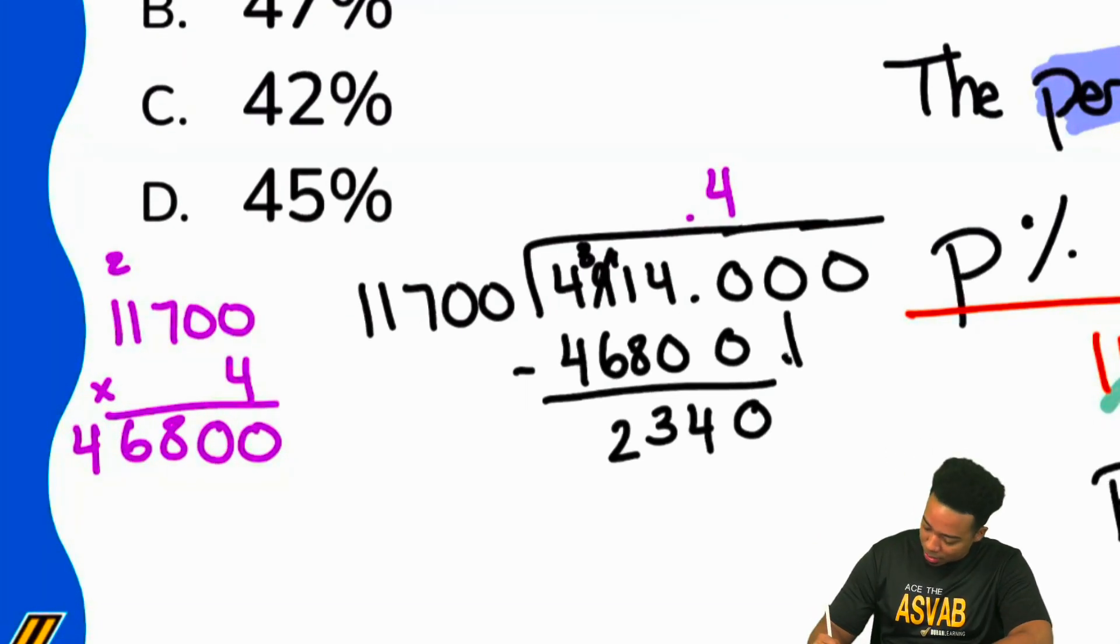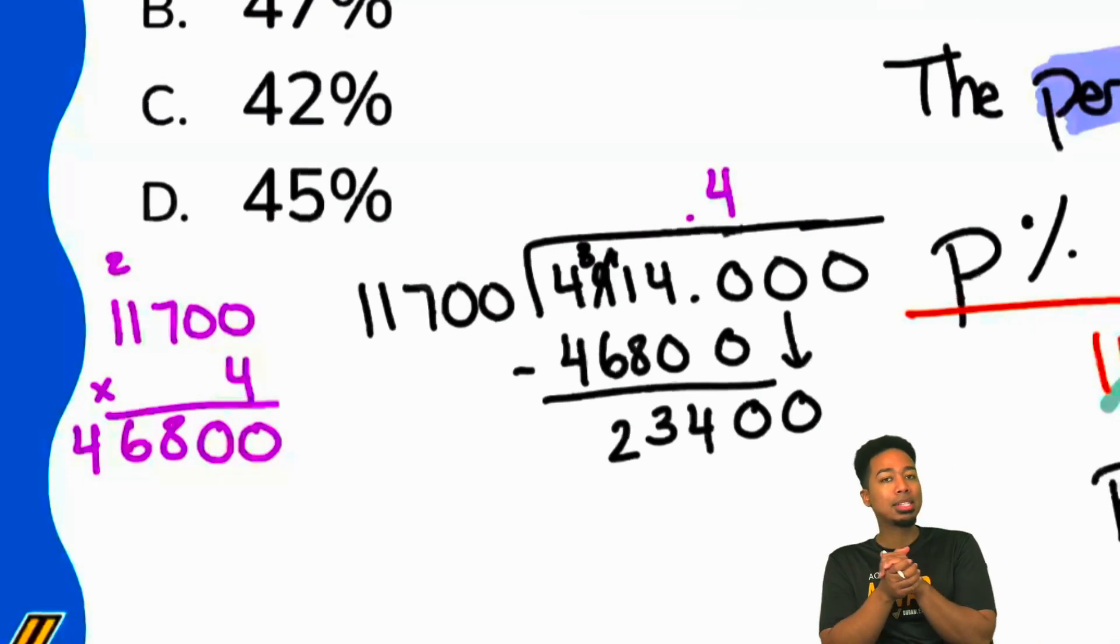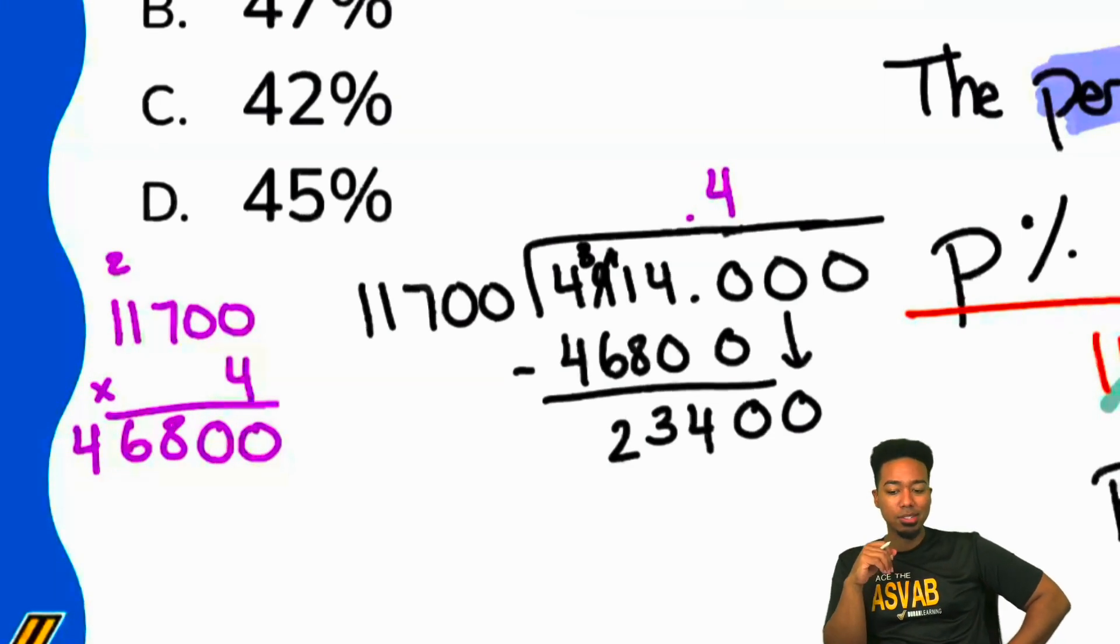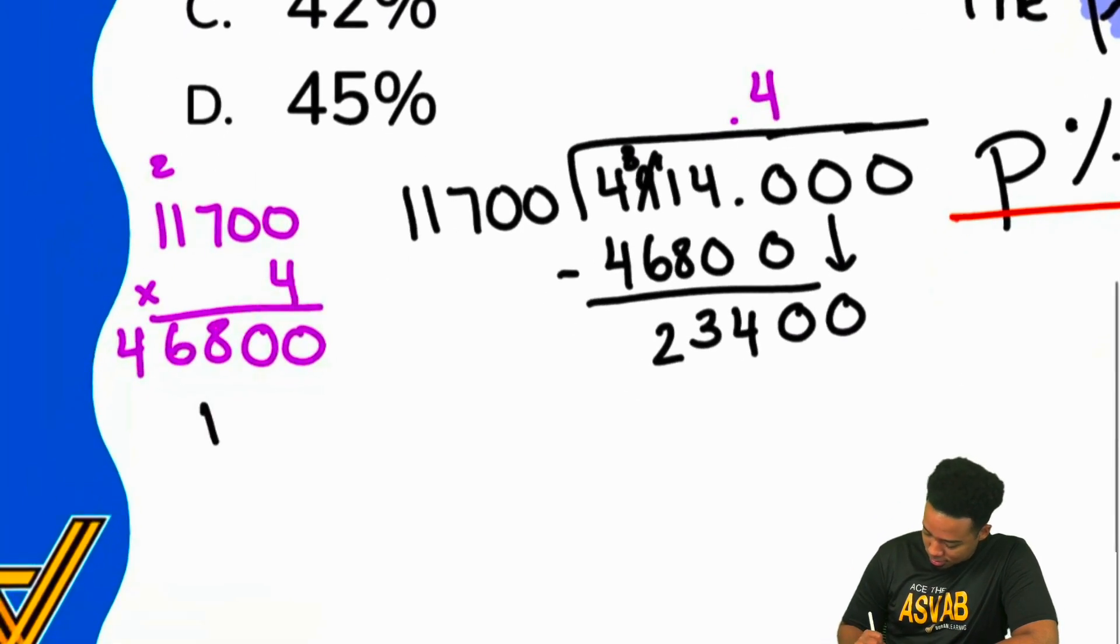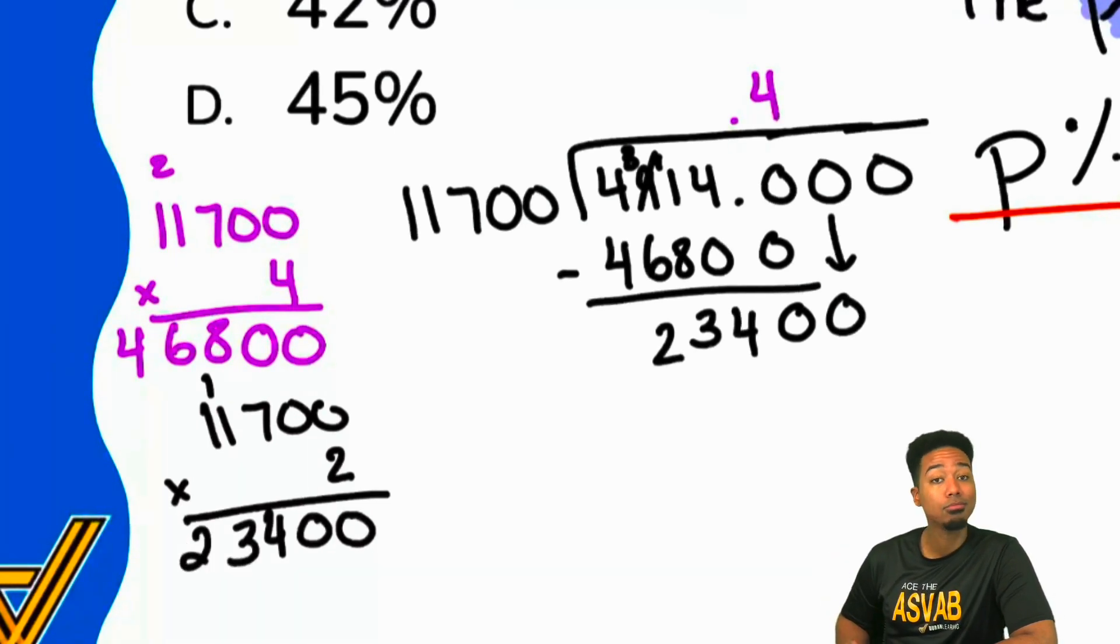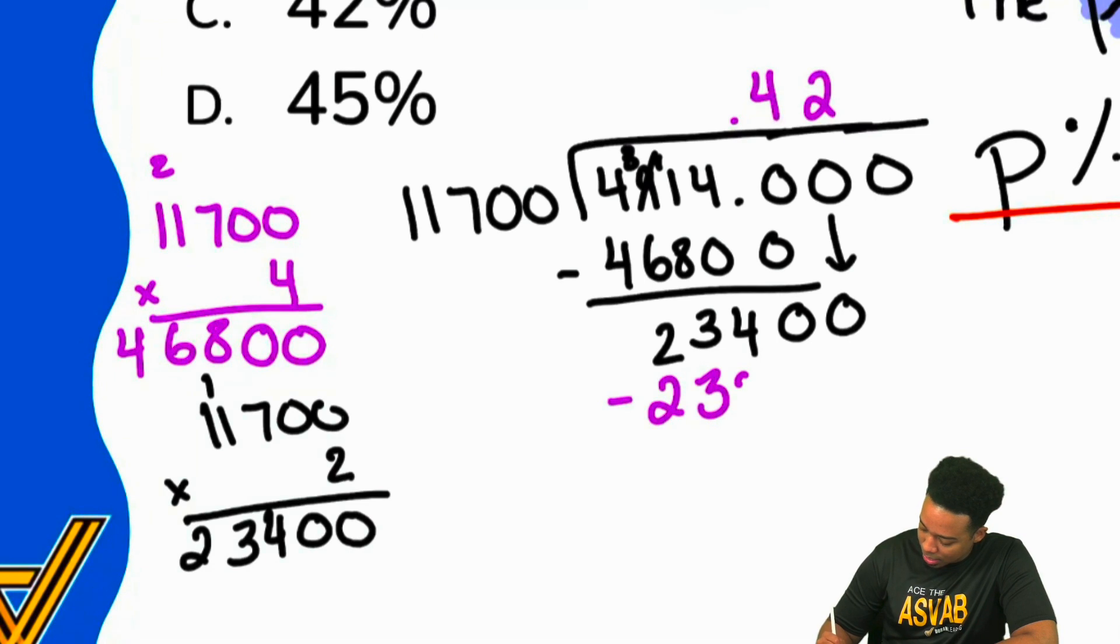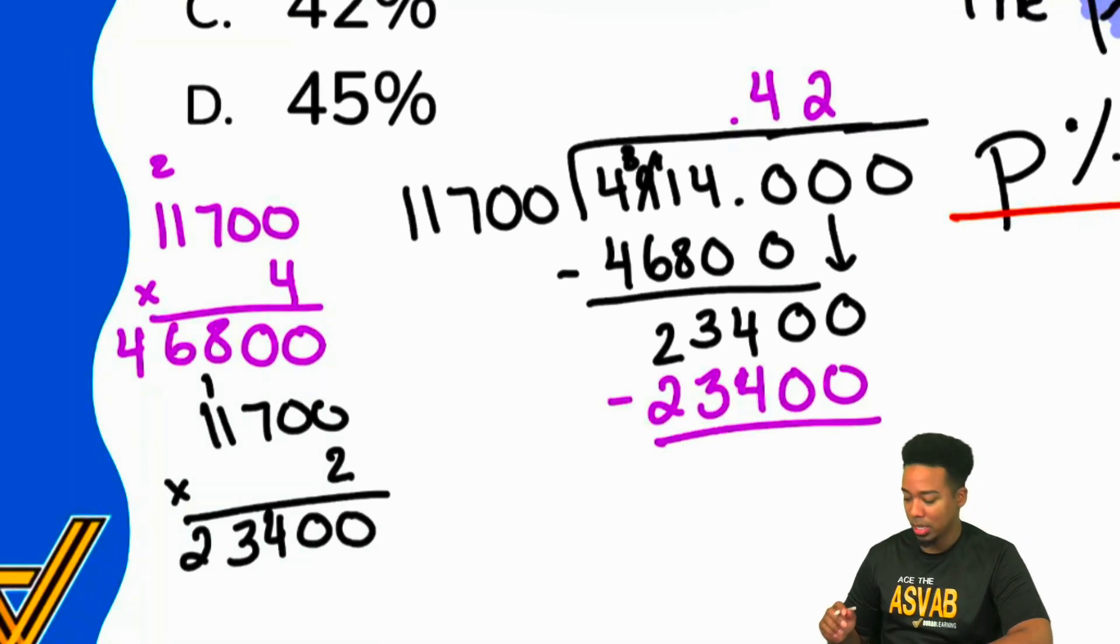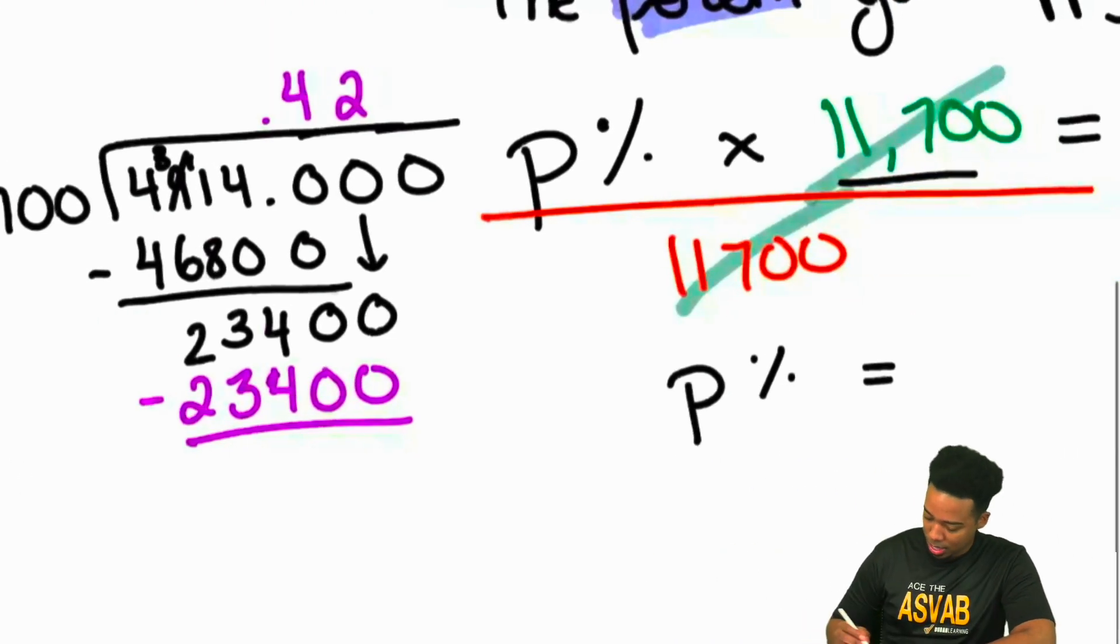Now we'll continue bringing down the next zero. Everyone, how many times do we think 11,700 might go into that number? I think it might go in twice. Sweet, let's check it out. 11,700 times two, that'll be two times zero, two times zero, two times four is fourteen, one times two is two, carry the one is three, and then one times two is two. Take a look: boom, exactly it fits perfectly. We'll plug in that two, and that's going to give us a clean 0.42. And there we are.